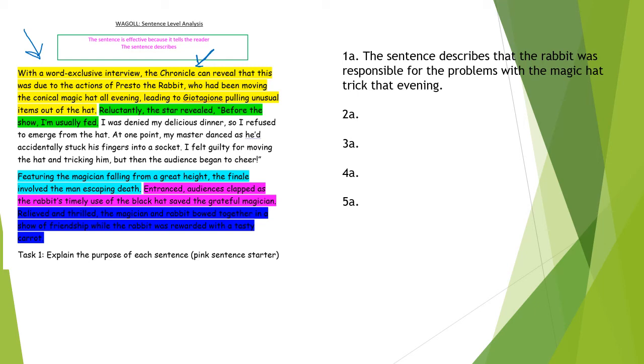Leading to the magician - be careful on that spelling. The reason it's that spelling rather than having simplified the name of the magician is that it's actually mentioned in the video because you can see the posters of his magic act. So it describes that the rabbit was responsible for the problems of the magic hat trick that evening. I think that's the main point of that sentence.